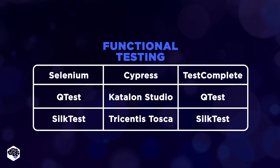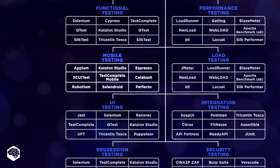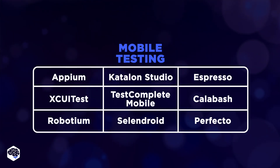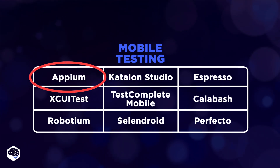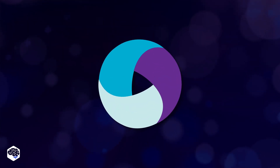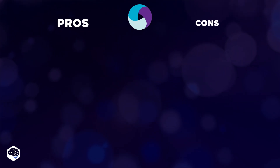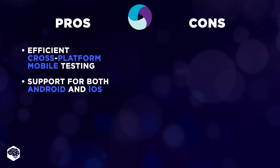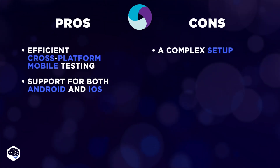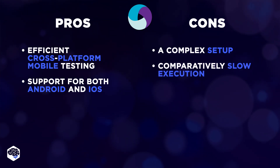While Cypress and Selenium are a good fit for web application testing, mobile testing automation has its own landscape of tools. At Jelvix, we use Appium for its seamless cross-platform mobile testing capabilities and support for both Android and iOS. On the downside, it has a complex setup for real devices and slower execution compared to native tools.